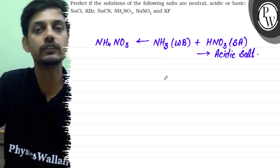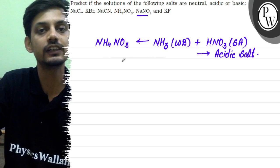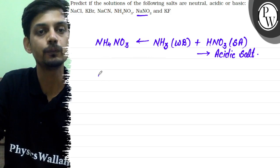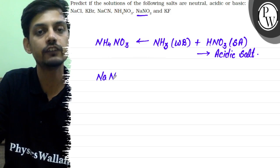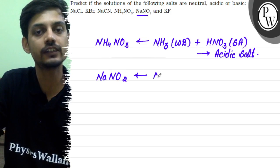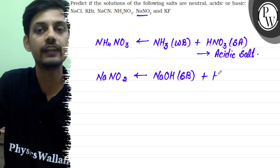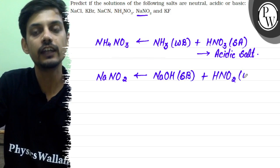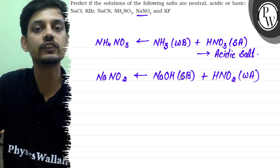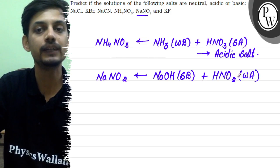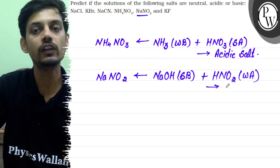The next salt is NaNO₂. NaNO₂ is formed by the neutralization of NaOH, which is a strong base, and HNO₂ (nitrous acid), which is a weak acid. So this salt belongs to the strong base–weak acid category, and it will be a basic salt.